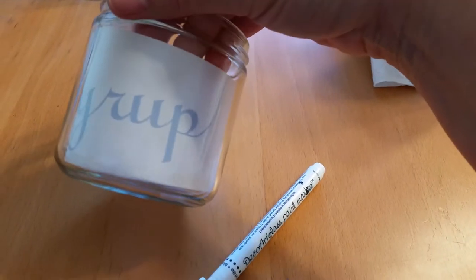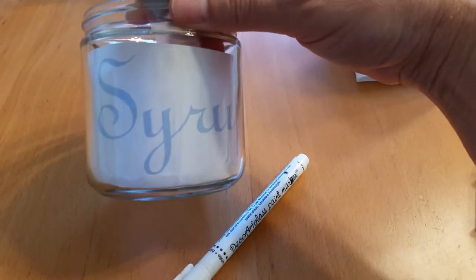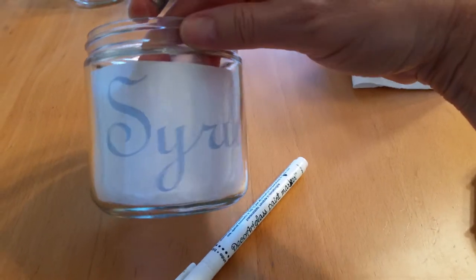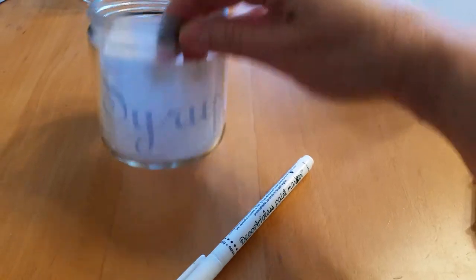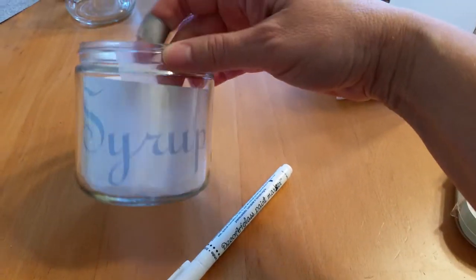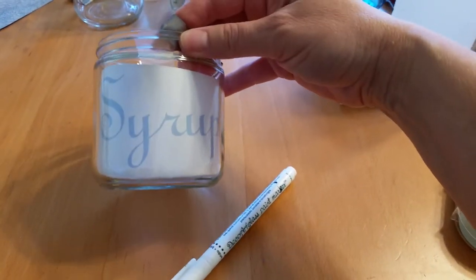I carefully lined up the bottom of the paper with the bottom of the jar so that the letters were at the height that I wanted, made sure it was pretty straight across, and put a little piece of tape to hold it in place.